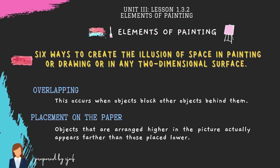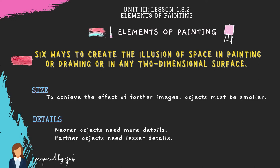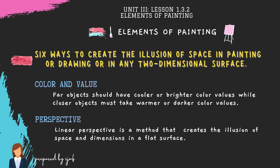There are six ways to create the illusion of space in a two-dimensional surface. First, overlapping — this occurs when objects block other objects behind them. Second, placement on the paper — objects arranged higher in the picture appear farther away. Third, size — to suggest farther images, objects must be smaller. Fourth, details — nearer objects need more detail, farther objects need less. Fifth, color and value — far objects should have cooler or brighter color values, while closer objects take warmer or darker values. Sixth, perspective — linear perspective is a method that creates the illusion of space and dimension on a flat surface.